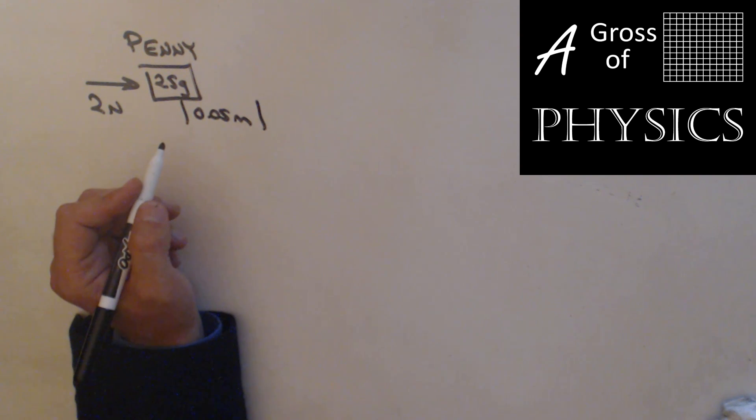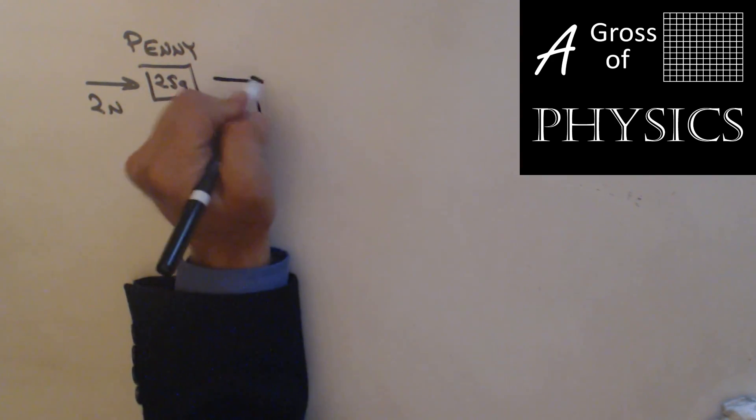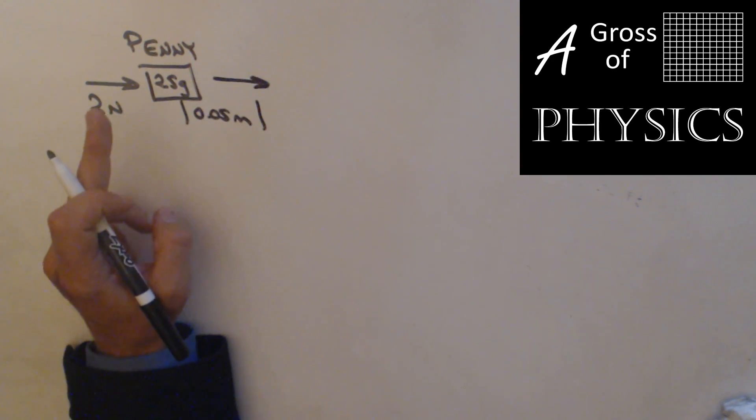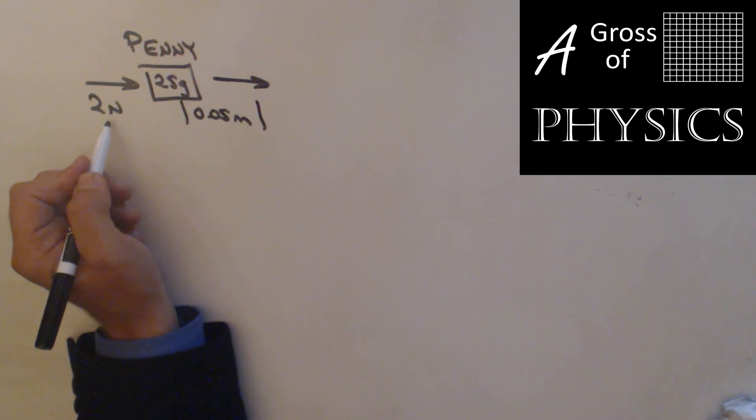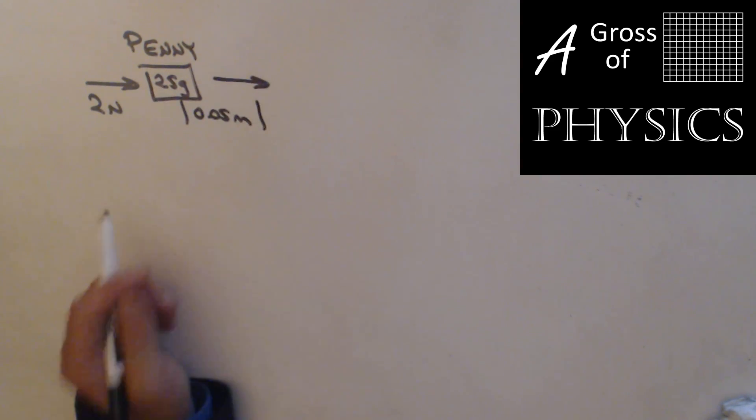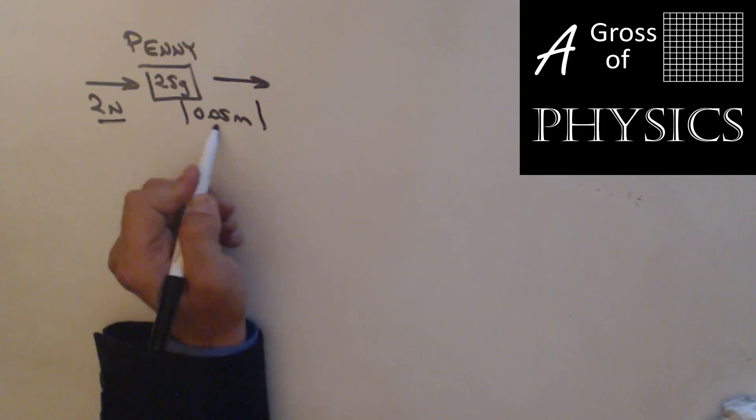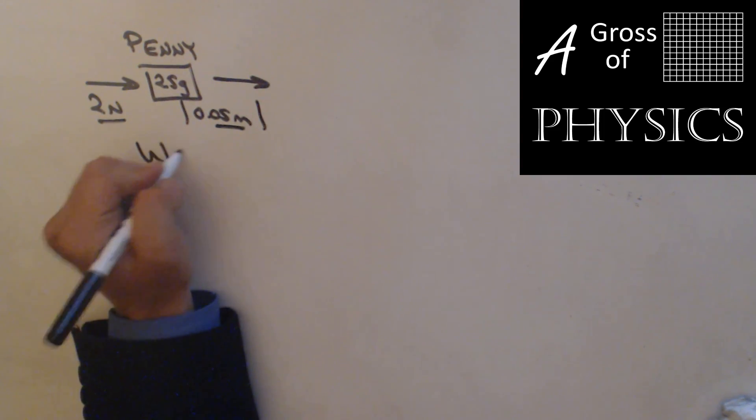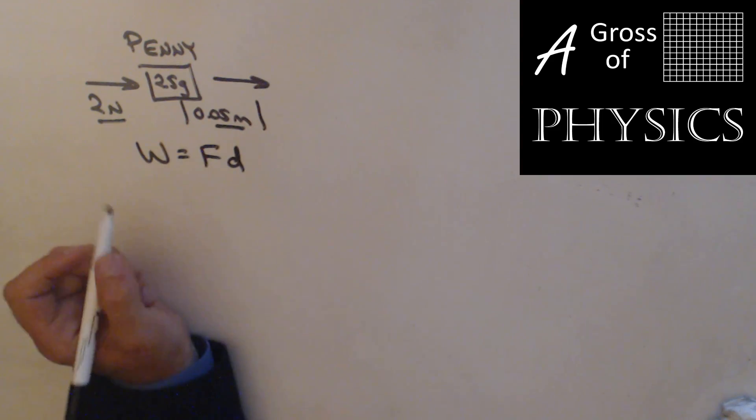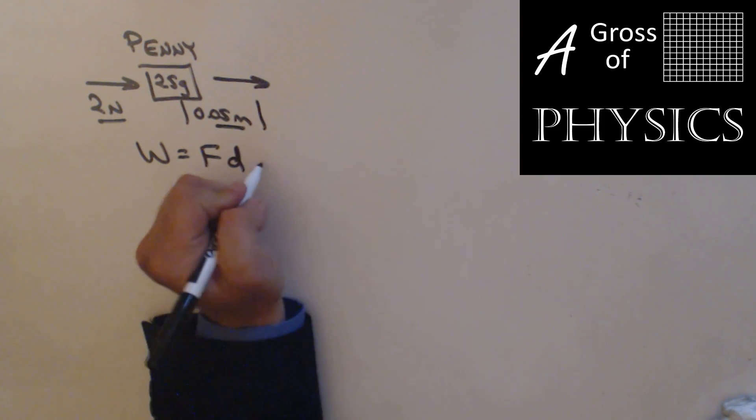For this next one, what we're going to do is determine how fast a penny's going to move if I flick it with my finger with 2 newton force, and while I'm in contact with it, it moves 0.05 meters. Now if we look at this, this is a force and a distance. So that's the work we have to do. The force is 2 newtons times 0.05, so the work I do is 0.1 joules.